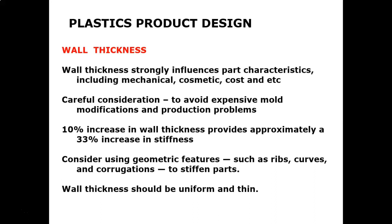Increasing wall thickness will increase cycle time and the cost of material. So we need to consider using geometric features such as ribs, curves, or corrugations to stiffen the part — it's not always necessary to increase thickness. These features can add sufficient strength, like ribs, curves, and corrugations, with very little increase in weight and cycle time.